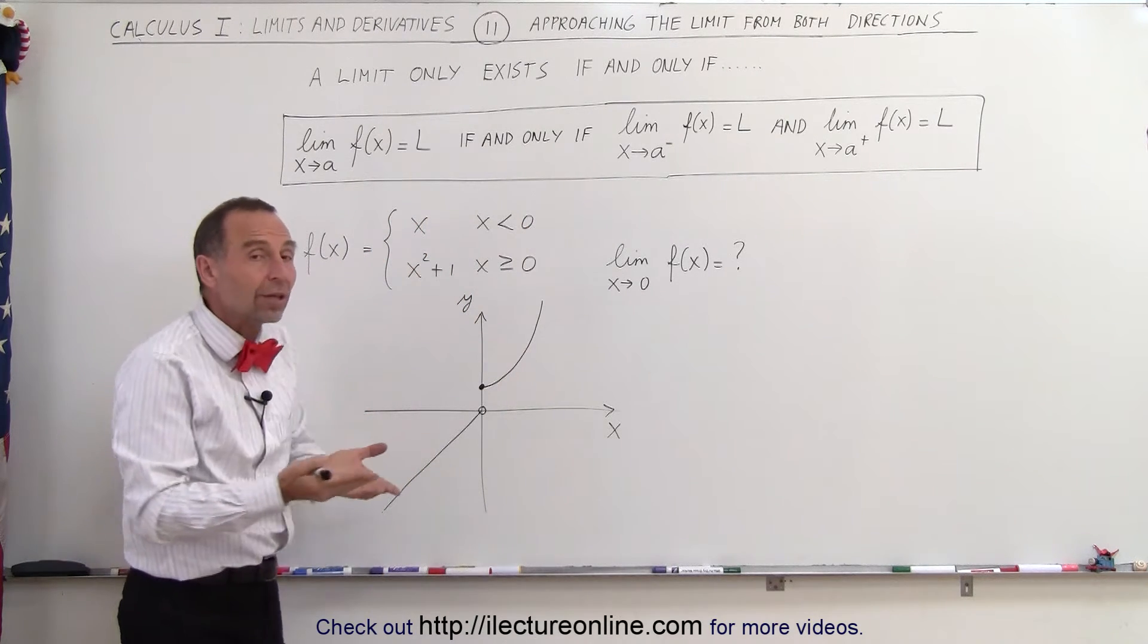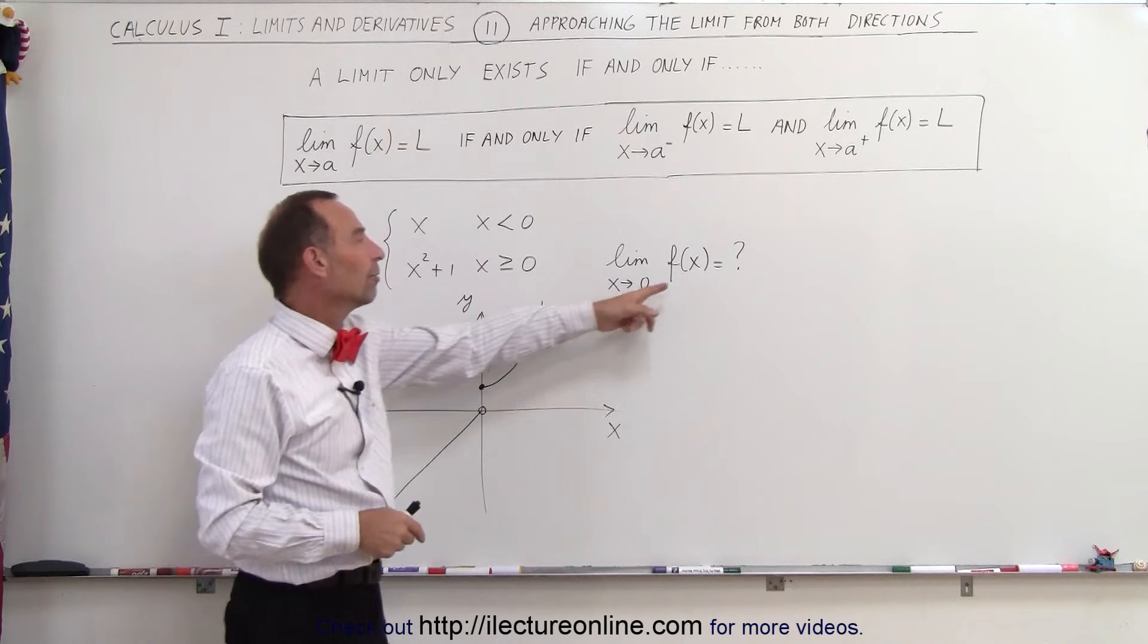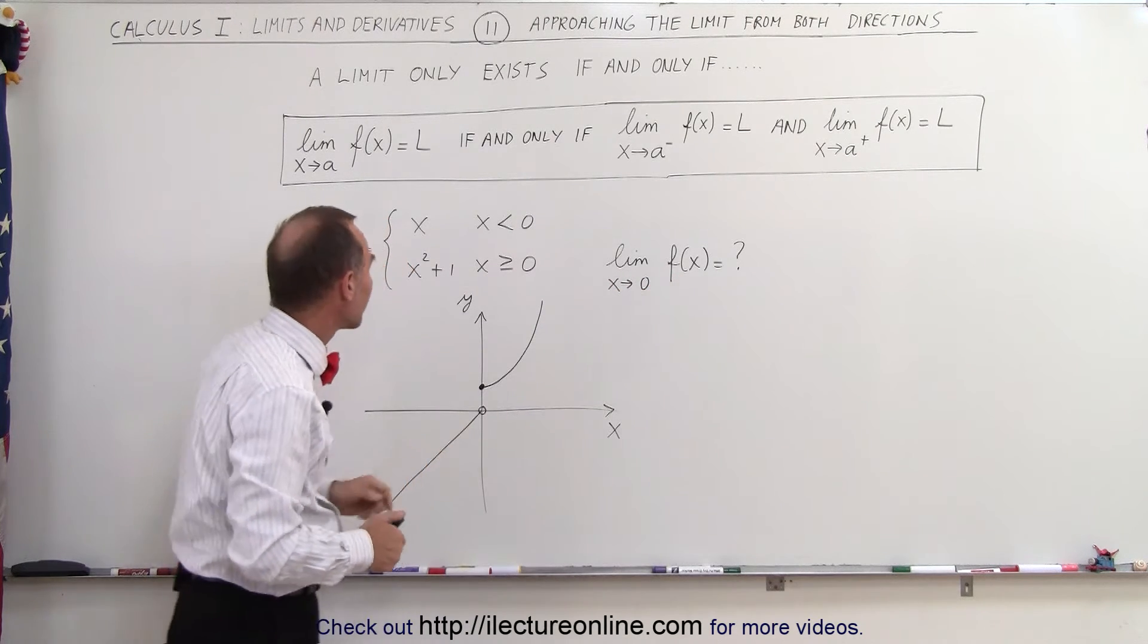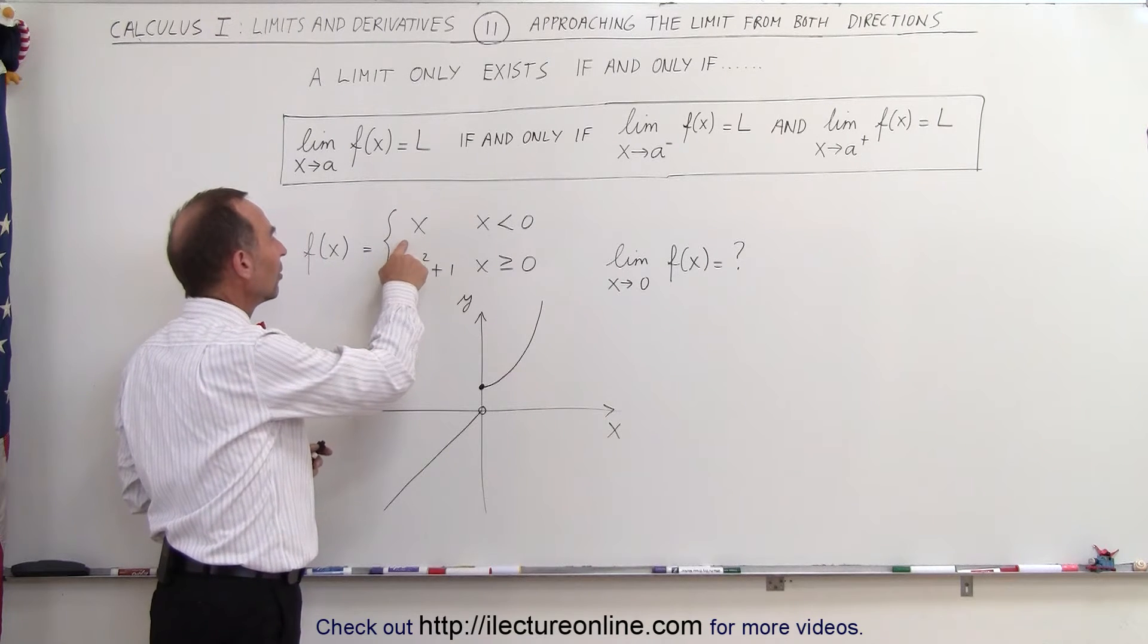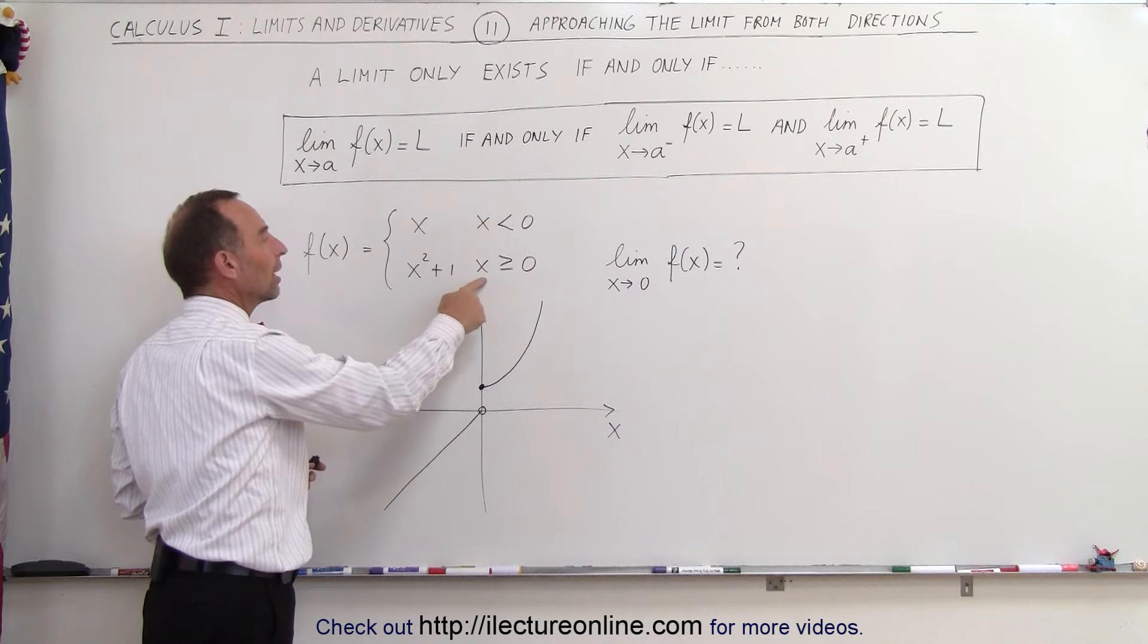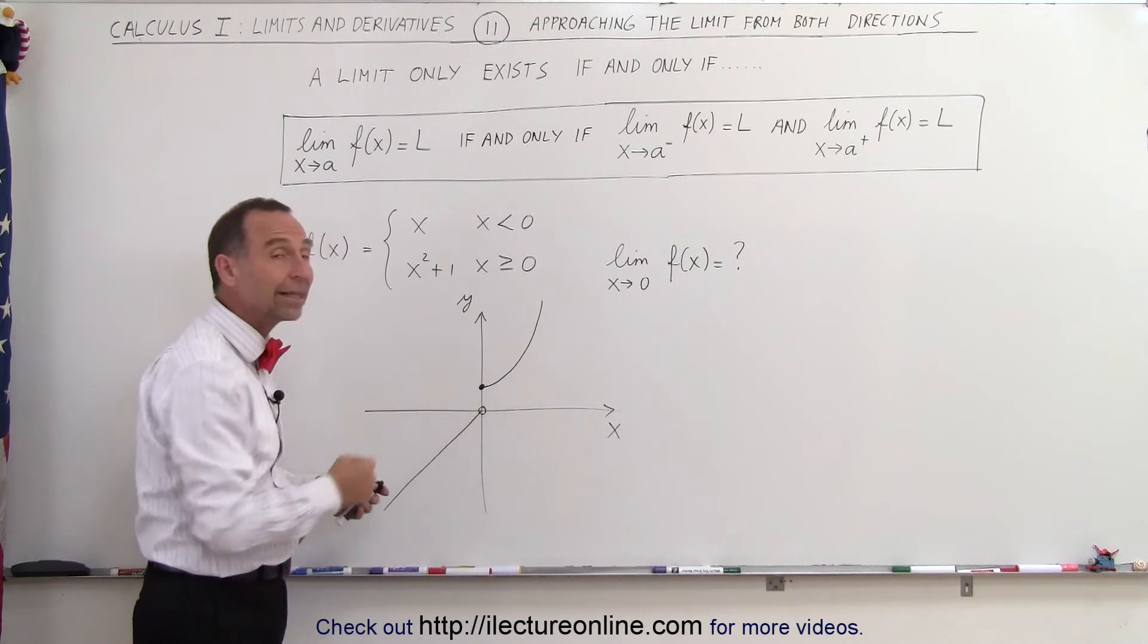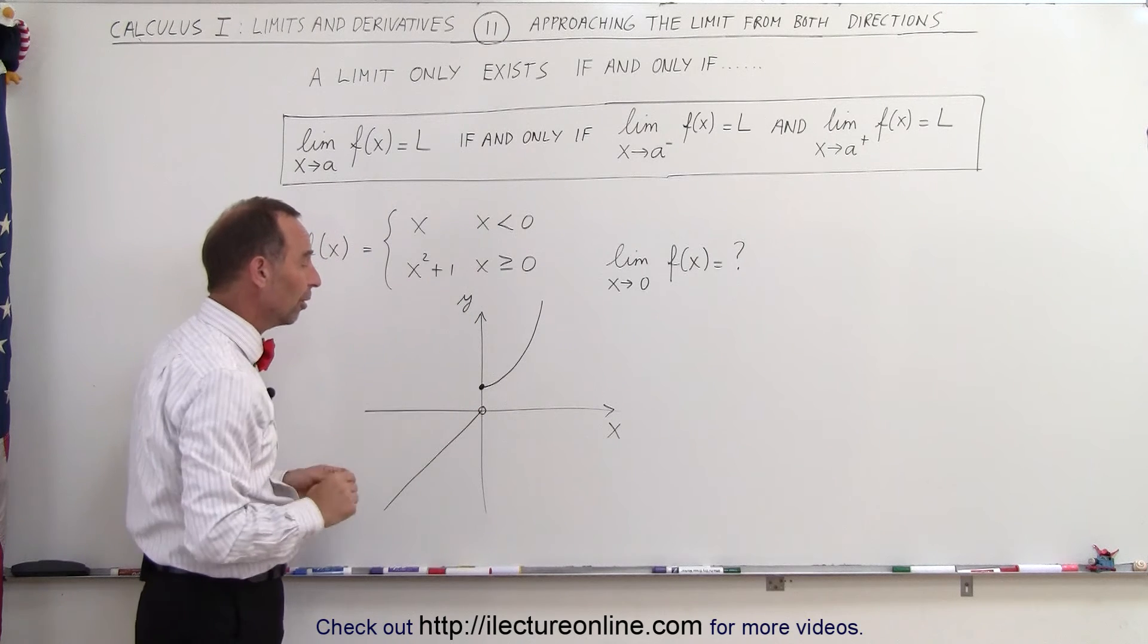So here's an example where the limit would not exist. Let's say we're trying to find the limit of the function as x approaches 0, and the function is equal to x for x less than 0 and equal to x squared plus 1 when x is greater than 0. Graphically, the function looks like this, and you can see again there is a break there at the value for x equals 0.